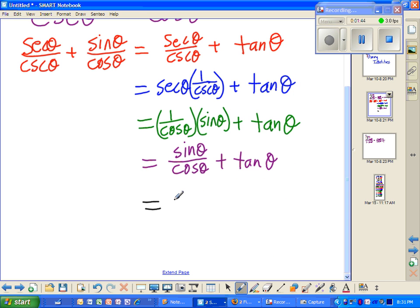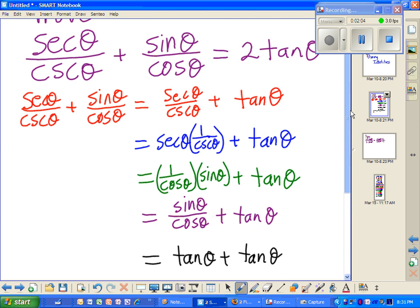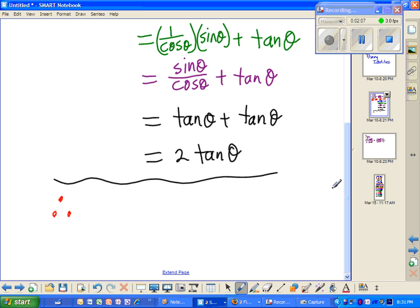So I get tangent of theta plus tangent of theta, which is my end result, two tangent of theta. So you can see that I've proved it, my original statement of secant of theta over cosecant of theta plus sine of theta over cosine of theta does indeed equal two tangent of theta.